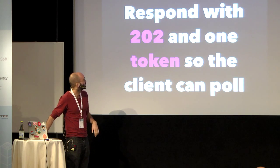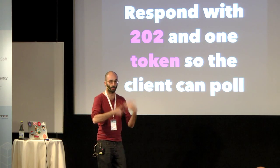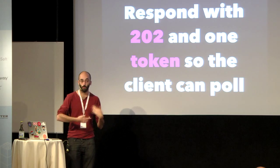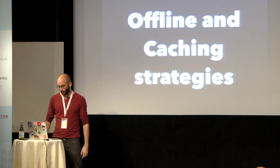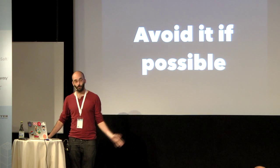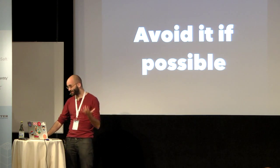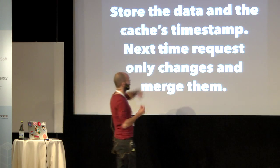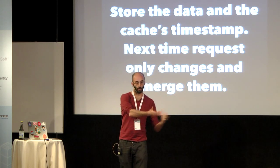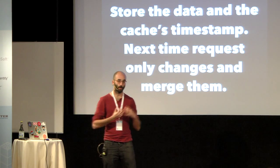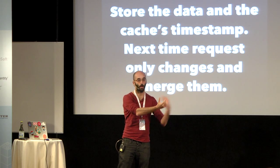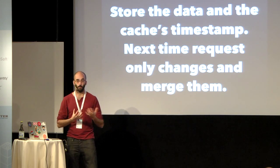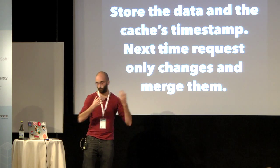For asynchronous operations — when you do an action and it takes a little time — respond with a 202 and a token, so the client can poll and check for changes. Then offline and caching strategies: avoid them if possible, it's really hard. But if you have to, expose your API's cache. Whenever you ask for something, return the data and the timestamp it was cached. Next time the client asks, it sends that timestamp and the server gives back only the differences. That's how we do caching — syncing only what's changed instead of always fetching all the data.